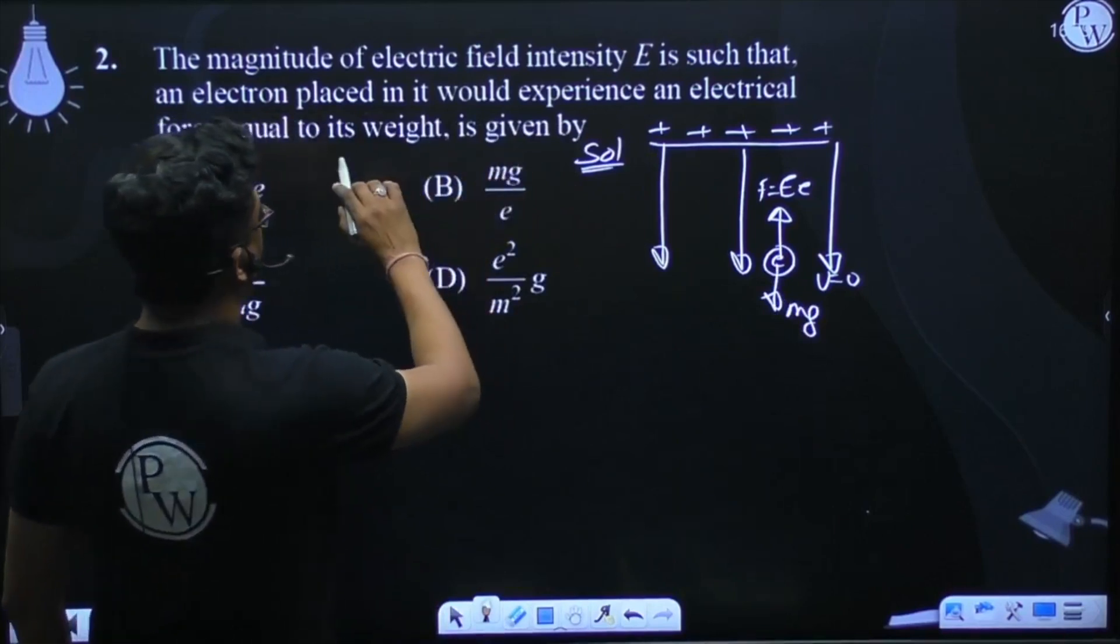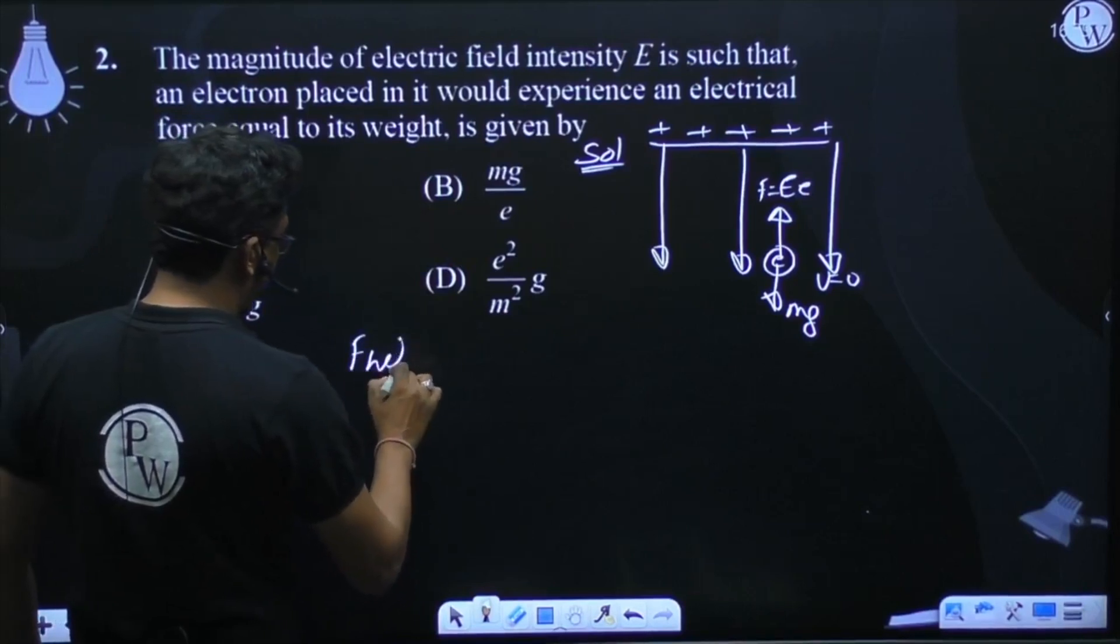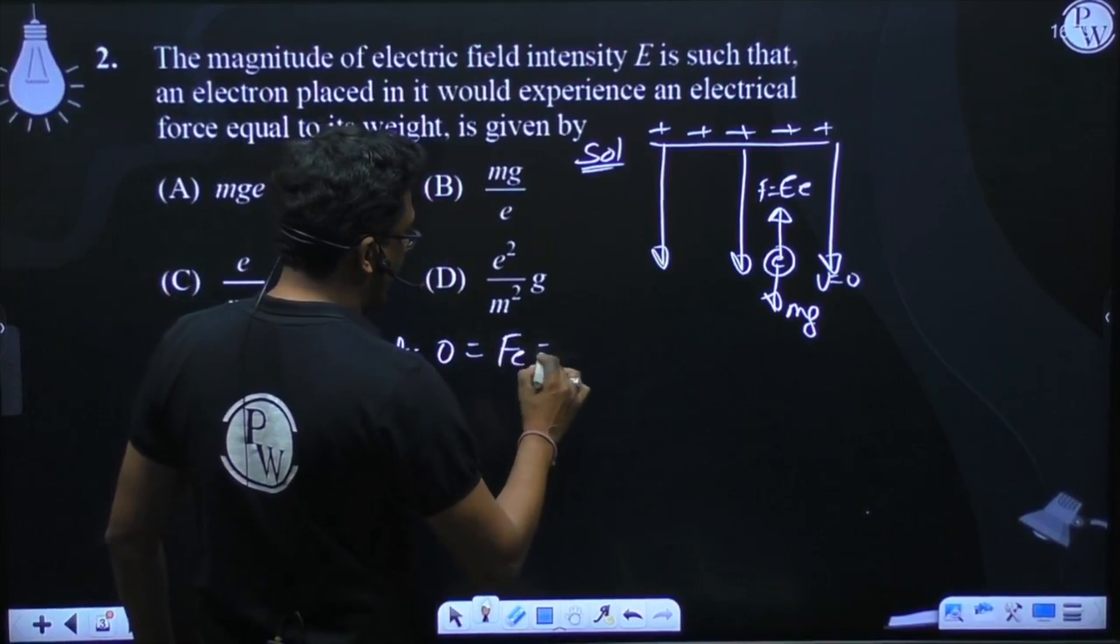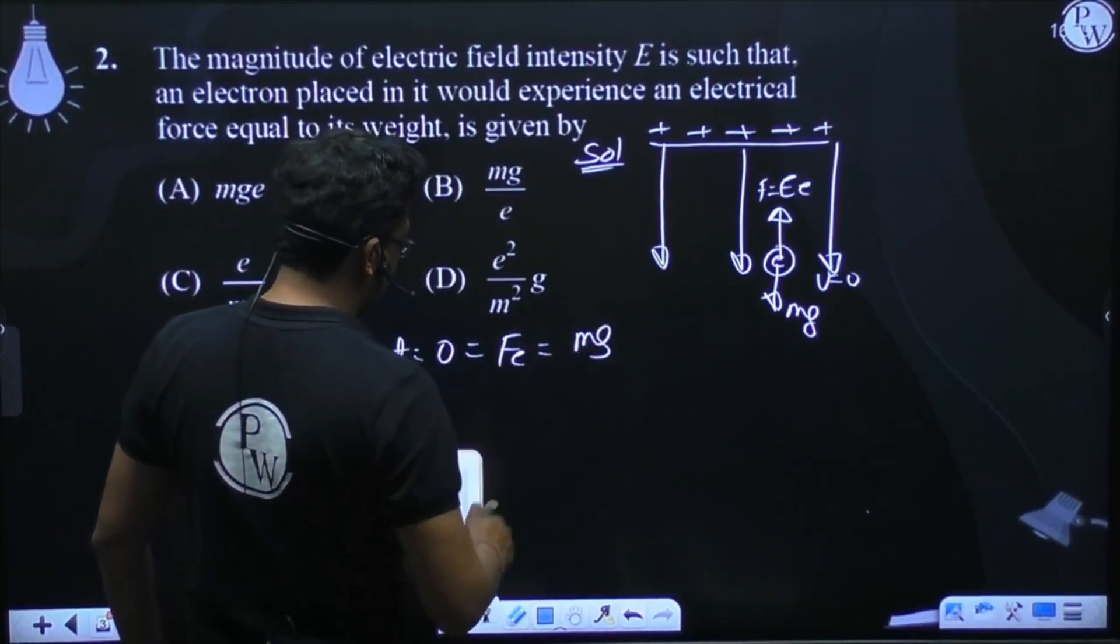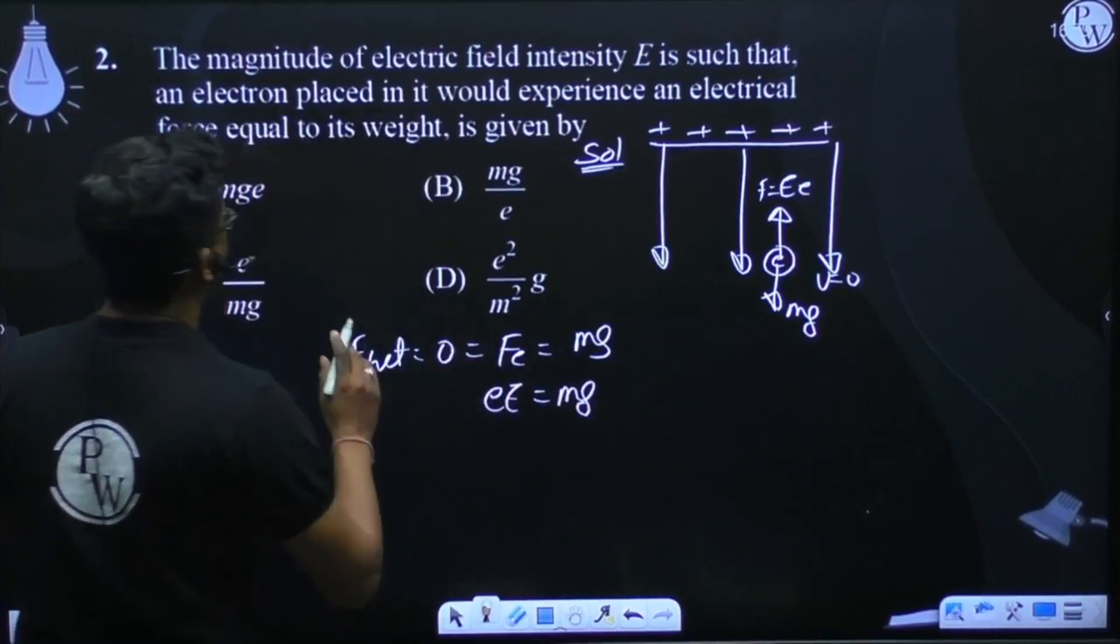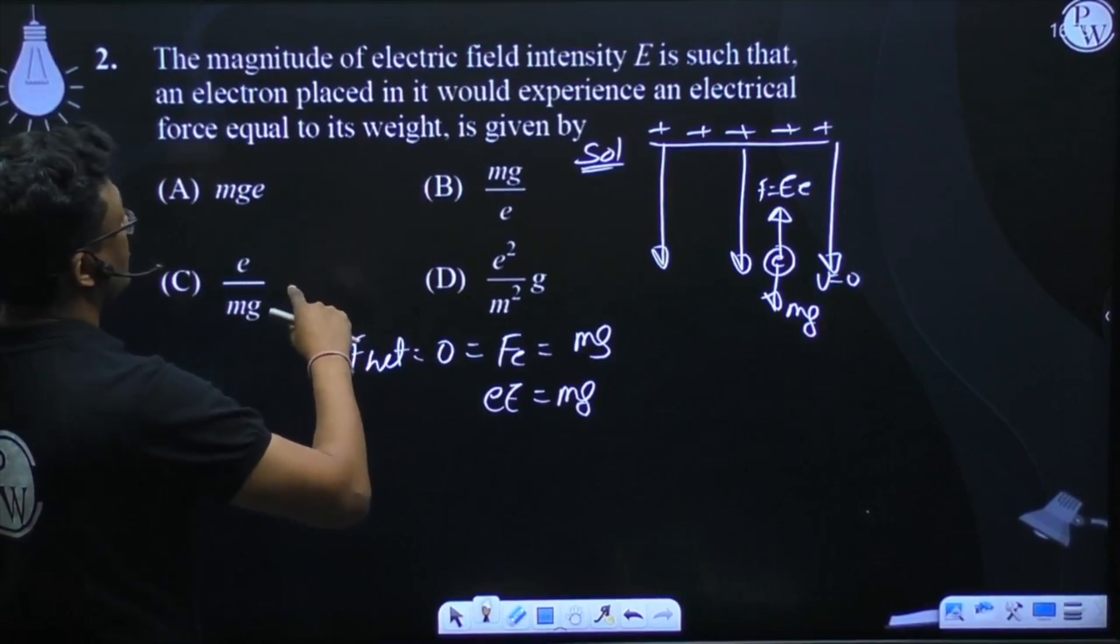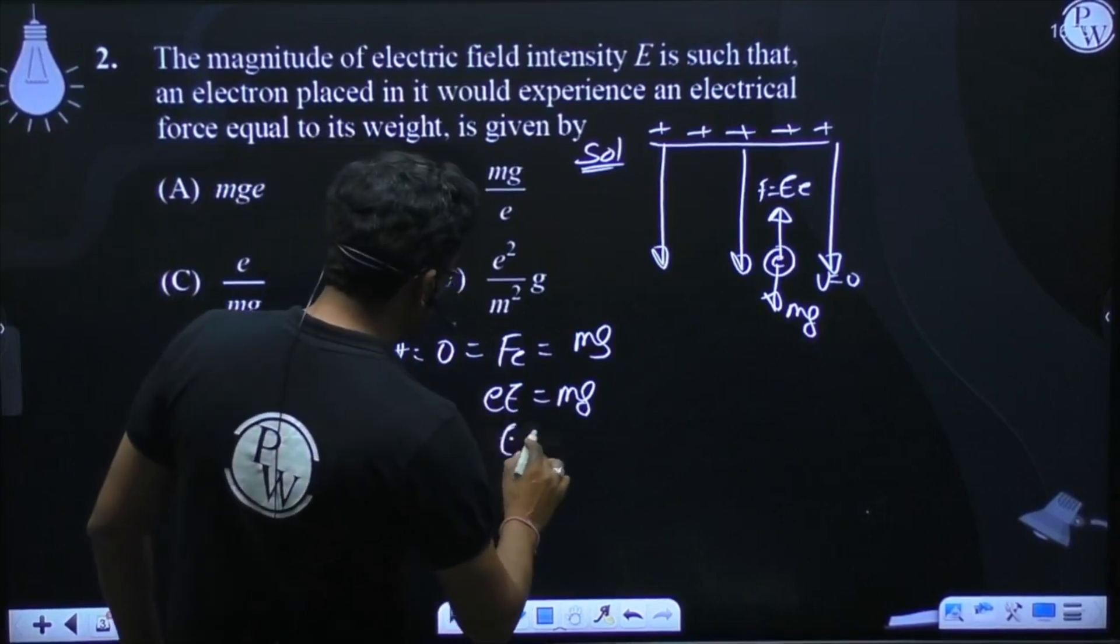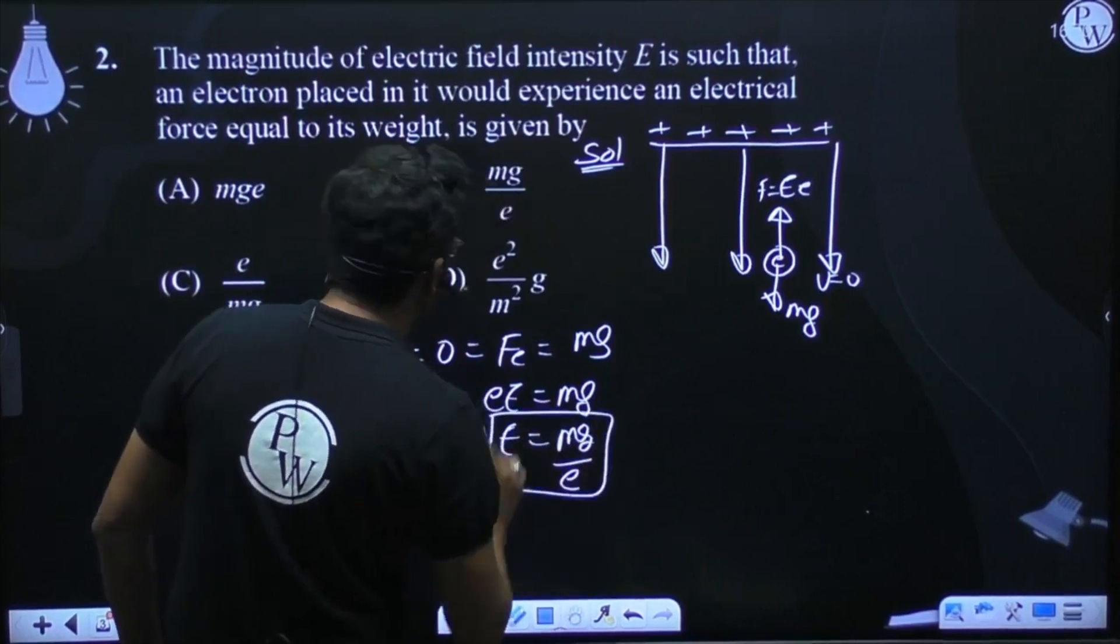So that means F net is equal to 0, which means F electrostatic is equal to MG. That is, EE is equal to MG, and so aapke paas kya cheez aajati hai? Electric field ki value aajati hai aapke paas MG by charge of electron.